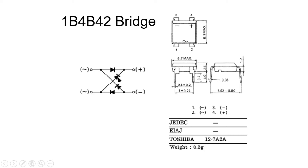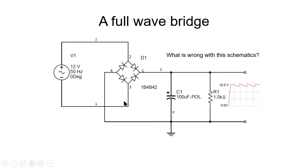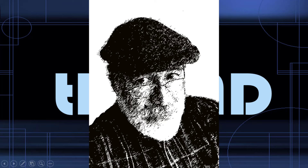I cannot leave this set of slides without showing you the physical realization of the rectifying bridge — those four diodes packaged in a single case with four pins. Pins 1 and 2 are connected to the AC source, and pins 3 and 4 are connected to the load — pin 4 is positive and pin 3 is negative. Here you see that bridge connected to a circuit with a capacitor. Thank you very much for watching. I hope to meet with you again in our next and last video dedicated to diodes — that will be the Zener diode. Good night.